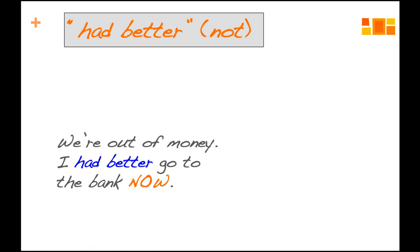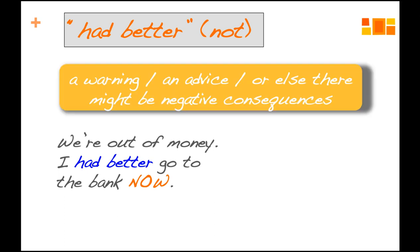Let's have a look at the grammar here. So this is one more sentence. We're out of money. I had better go to the bank now. We use 'had better' when we want to express a warning or when we want to give advice, when we want to say that something is advisable. The important thing is 'or else', which kind of means if you don't do this, there will be negative consequences.